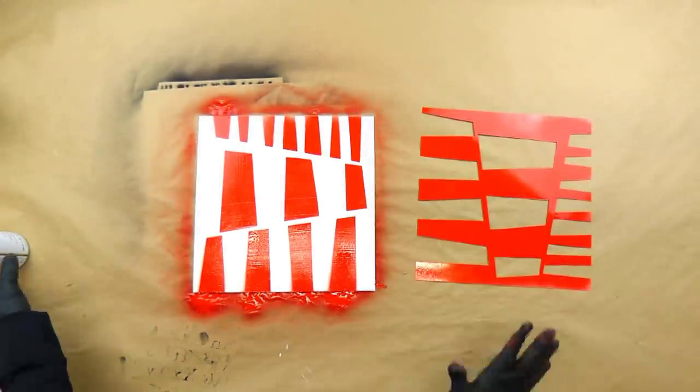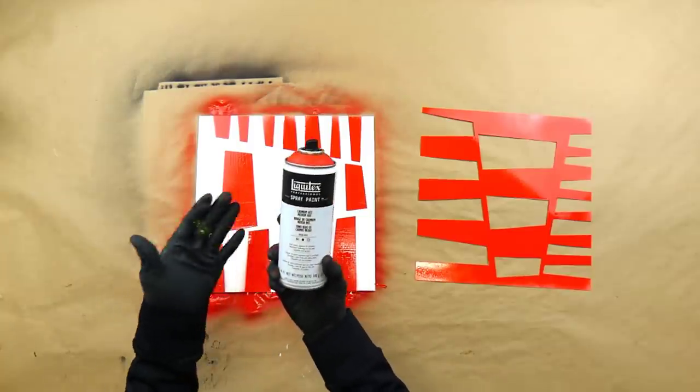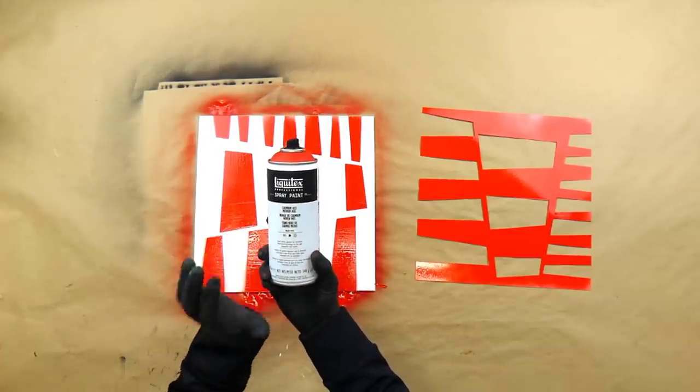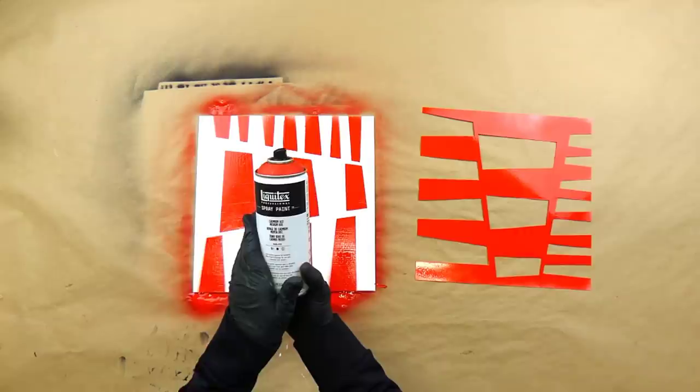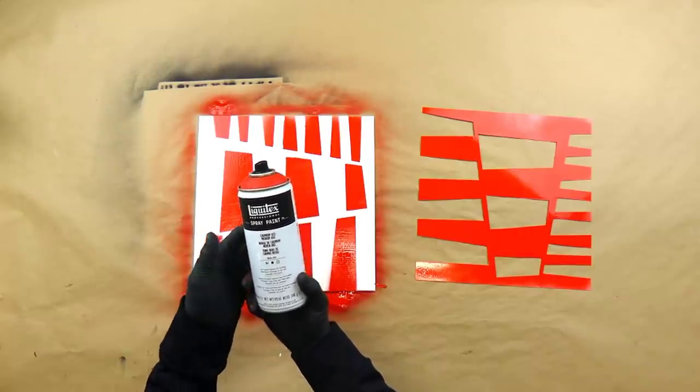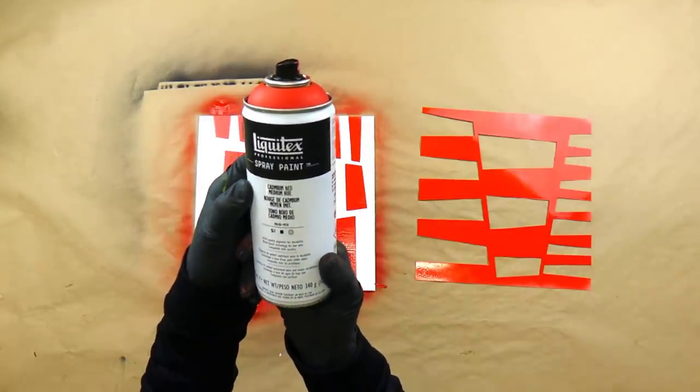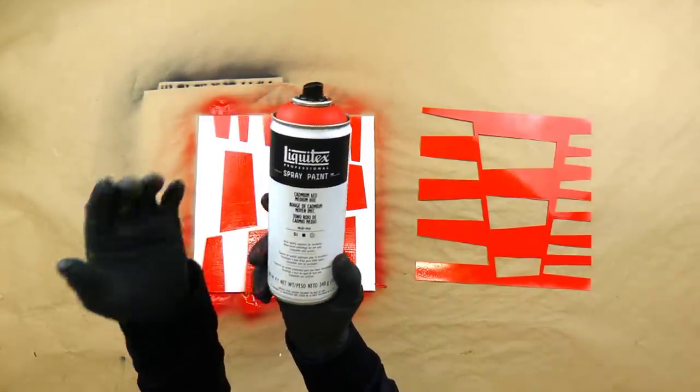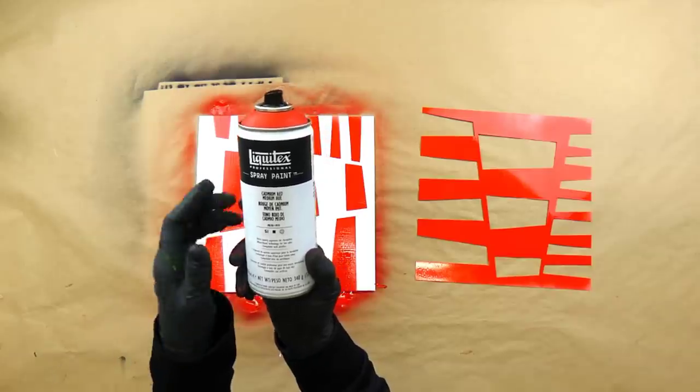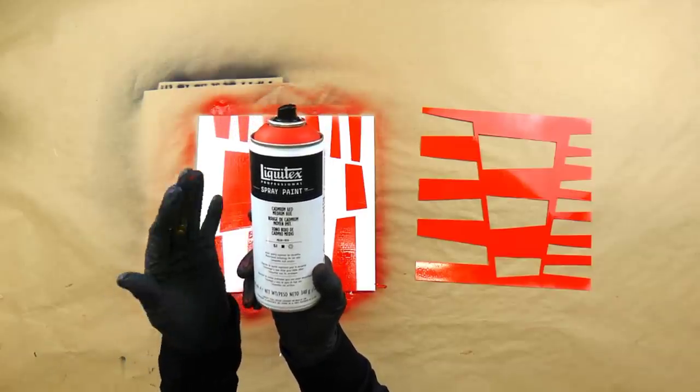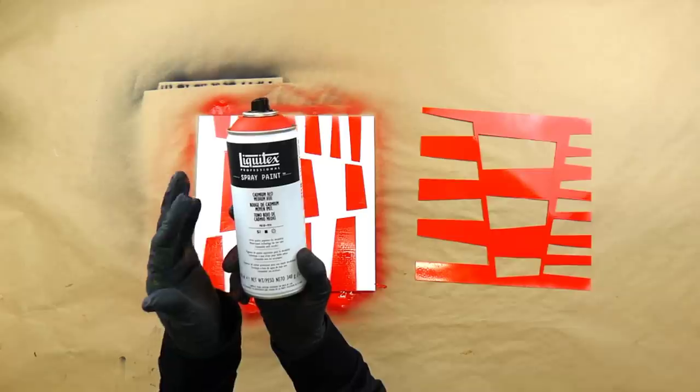So now, this is an acrylic spray, and I'm not aware of oil-based spray paints, so I stick with the acrylic. And this happens to be a cadmium red medium hue. And there are certain pigments that you really have to take even extra special precautions, and cadmiums are one of them, because the pigment is a heavy metal.